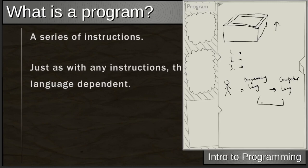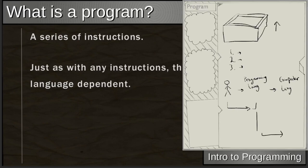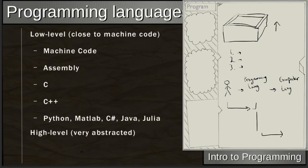The step from programming language to computer code is handled mostly by tools people have already made. We won't be translating programming language to machine code ourselves — we want to understand it a little, but what we're primarily dealing with is going from human language to programming language: how do we tell the computer to think in steps.